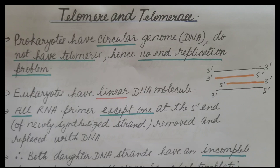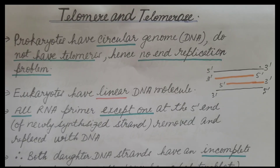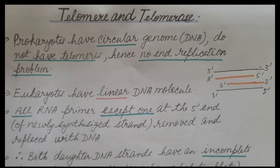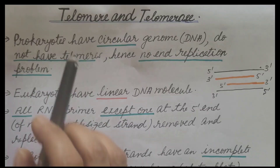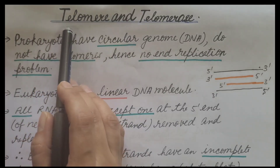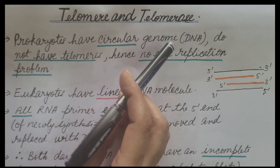Hello friends, we are discussing eukaryotic DNA replication. We have already discussed three steps: initiation, elongation, and termination. We also discussed primer removal in eukaryotic DNA replication. Today we are going to discuss telomere and telomerase.